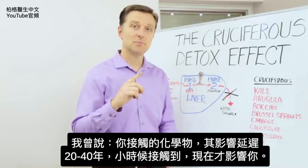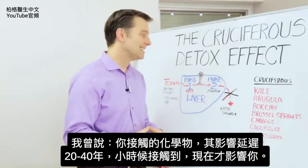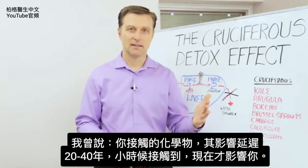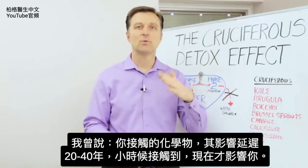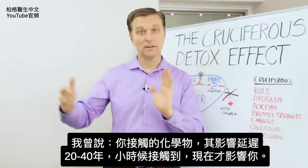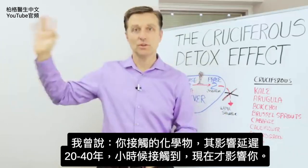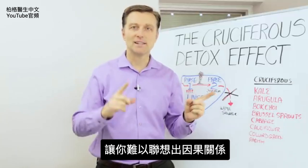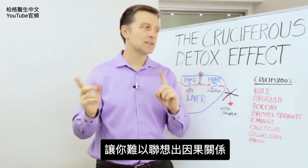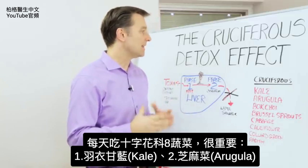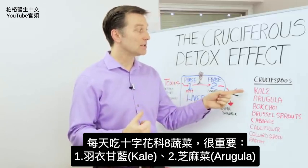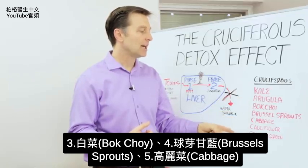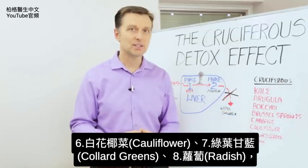A lot of these chemicals that people are exposed to have a delayed effect of 20, 30, even 40 years. So what affected you way back when you were a kid is now starting to affect you now, and that's why it's hard to connect the cause-and-effect relationship. That's why it's so important to consume kale, arugula, bok choy, brussel sprouts, cabbage, cauliflower, collard greens, and radish on a regular basis.